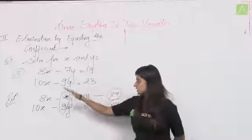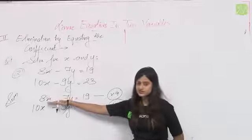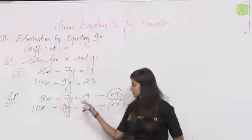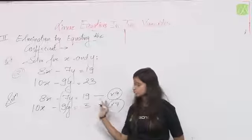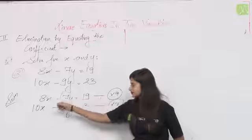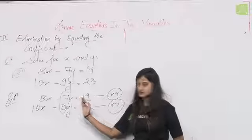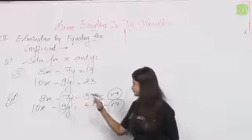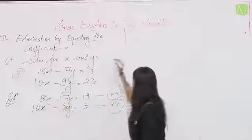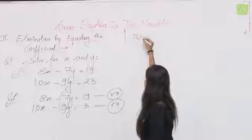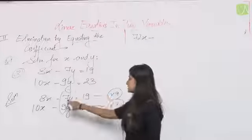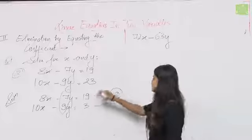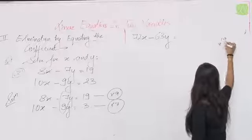RHS को भी multiply करना जरूरी है — सिर्फ LHS करने की गलती अक्सर होती है। जब पहली equation को 9 से multiply करेंगे: 72x − 63y = 171। जब दूसरी equation को 7 से multiply करेंगे: 70x − 63y = 161।